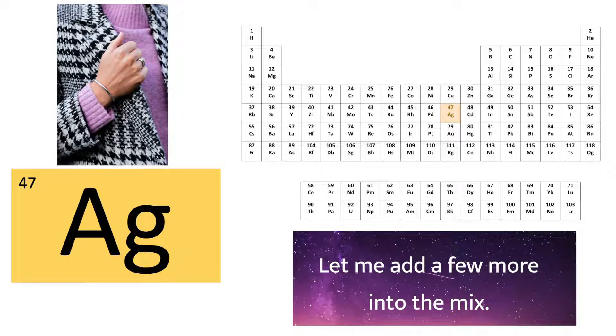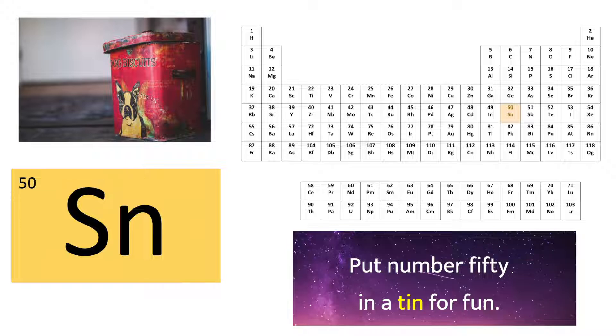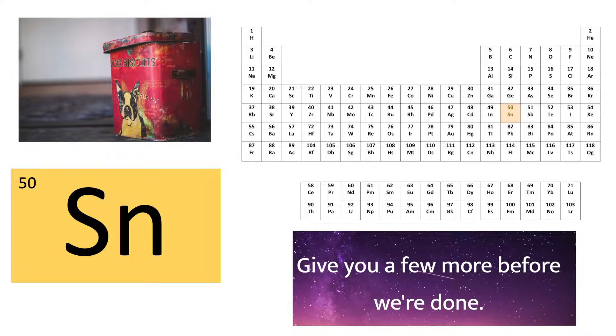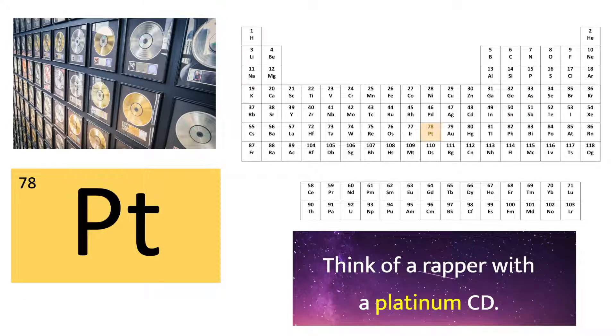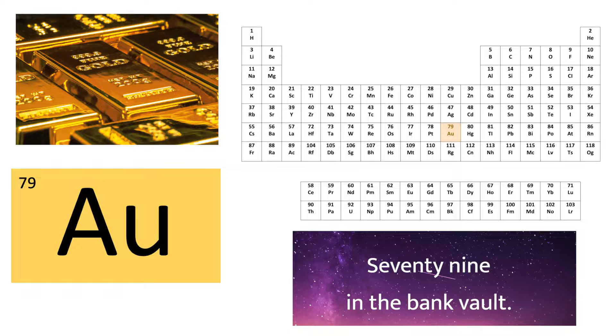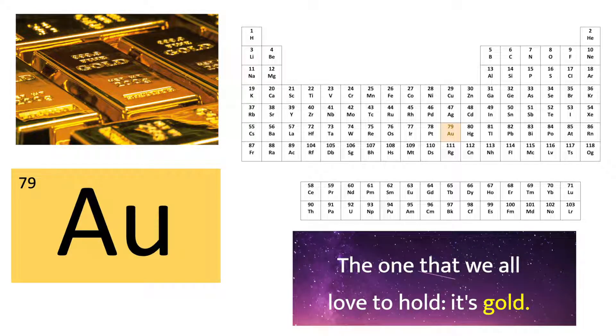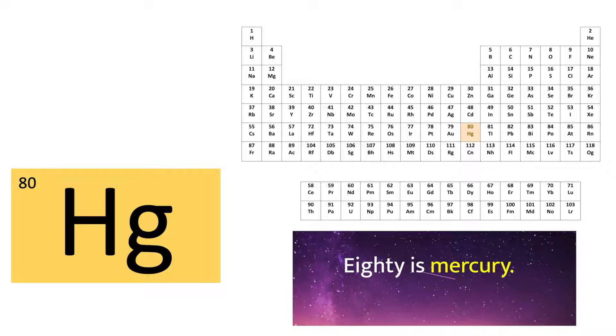Let me add a few more into the mix. 47, the silver on your wrist. Put number 50 in a 10 for fun. Give you a few more before we're done. 78 should be easy. Think of a rapper with a platinum CD. 79 in the bank vault. The one that we all love to hold is gold. 80 is mercury, a liquid metal most certainly.